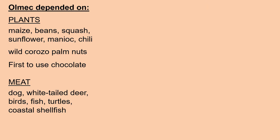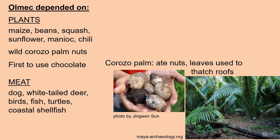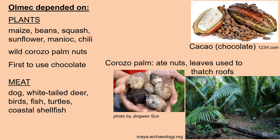The Olmec depended upon meat such as dog, white-tailed deer, birds, fish, turtles, and coastal shellfish. They also raised maize, beans, squash, sunflower, manioc, and chili. They collected wild corozo palm nuts, which are quite large — one bunch of nuts can weigh 40 kilograms — and these are very oil-rich nuts. The tree was useful in other ways too, because you could use the leaves to thatch roofs. And the Olmec were the first to use chocolate.